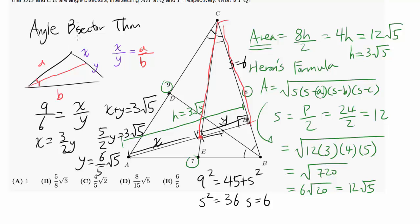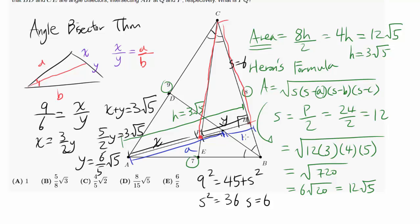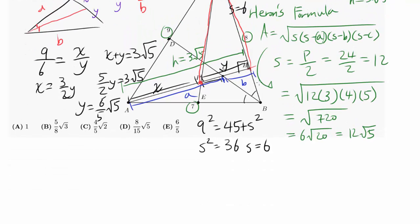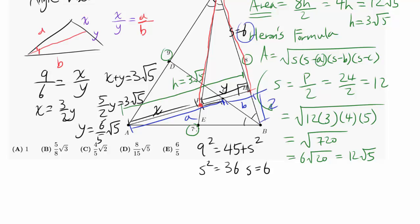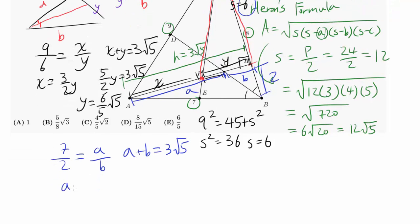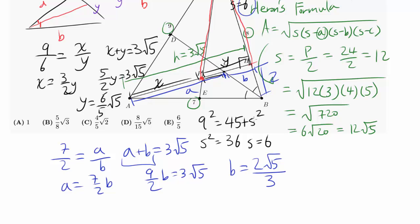Now let's look at triangle AHB, where angle bisector BD intersects AH at Q. Since CH equals 6 and BC equals 8, we get BH equals 2 via the Pythagorean theorem. Applying the angle bisector theorem: AB over BH equals AQ over QH, so 7 over 2 equals a over b. We also have a plus b equals 3√5. So a equals (7/2)b, giving (9/2)b equals 3√5, and b equals (2√5)/3.